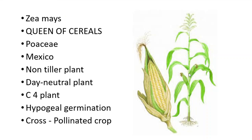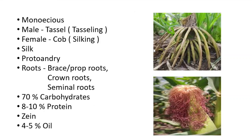The male part is called the tassel, and the female part is called the cob. The time duration in which the male part forms or emerges is called tasseling, and the time duration for the forming of the female part is called silking. Silk is the style of the female part of the cob that protrudes outward, forming a long hair-like structure.